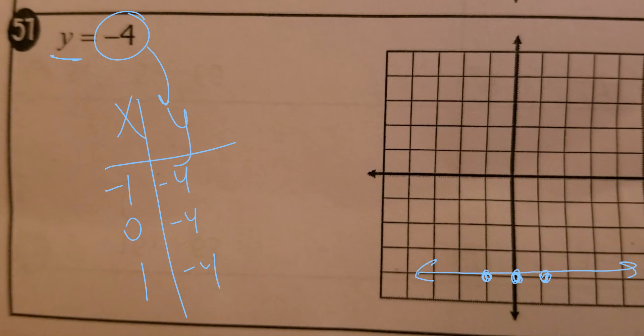I thought ahead of time y was going to be a left and right line. That means no slope, by the way. There's no slope — it does not rise at all. That's it for 57.